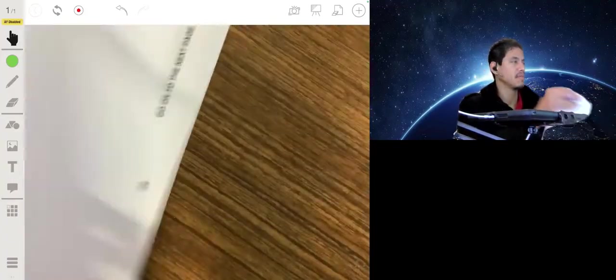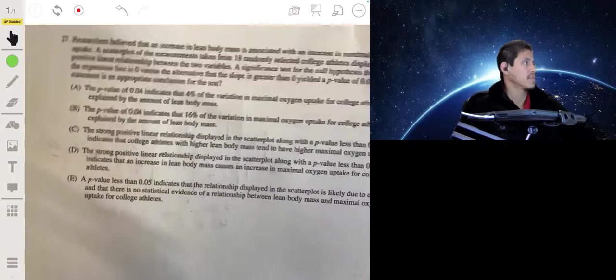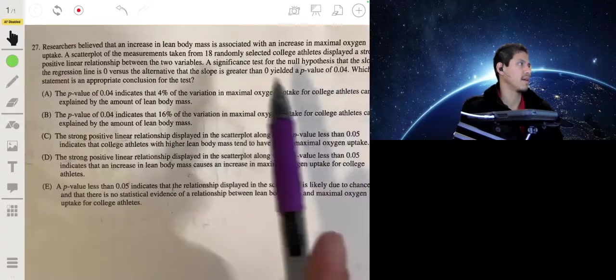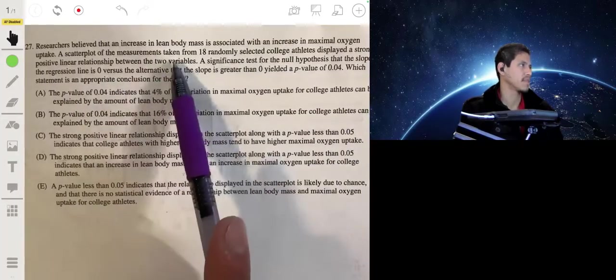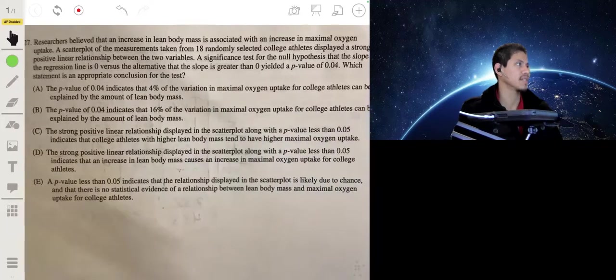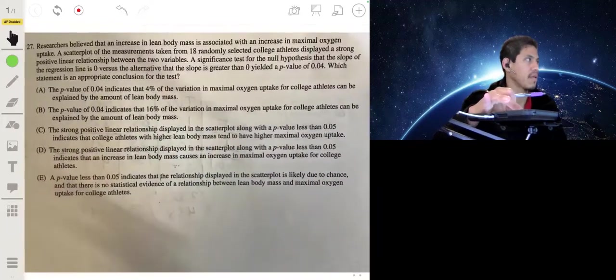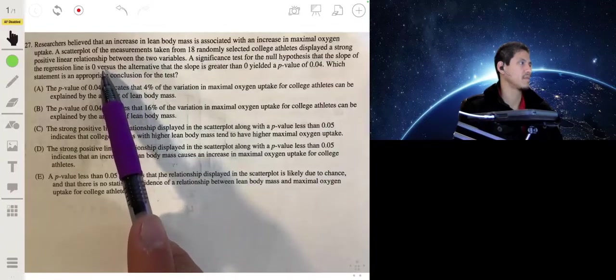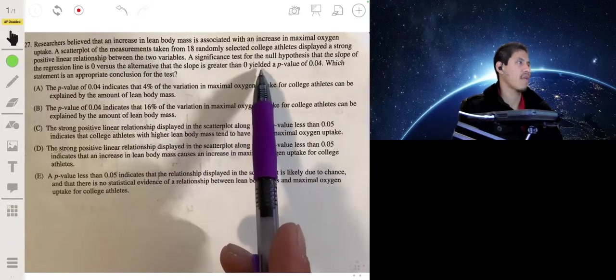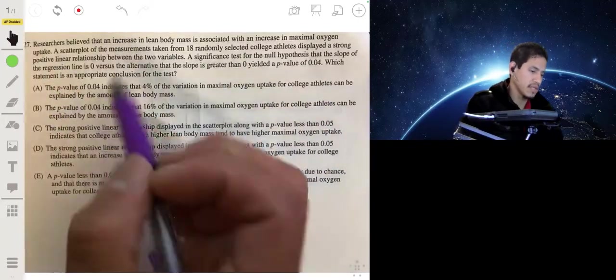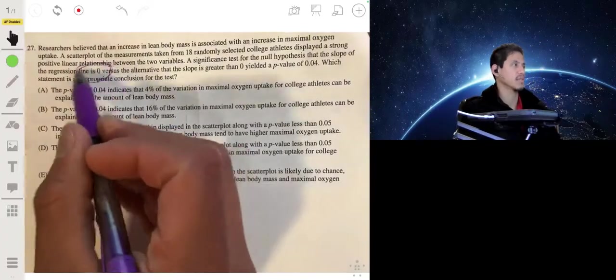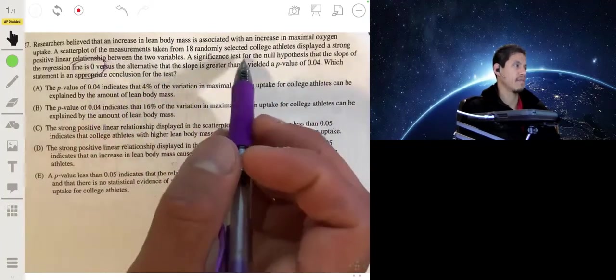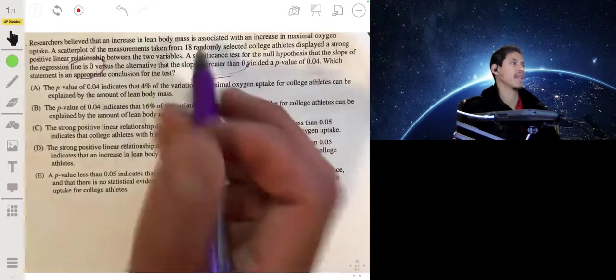All right, researchers believe that an increase in lean body mass is associated with an increase in maximal oxygen uptake. A scatterplot of measurements taken from 18 randomly selected college athletes displayed a strong, positive, linear relationship between the two variables. A significance test for the null hypothesis that the slope of the regression line is zero versus the alternative slope is greater than zero yields a p-value of 0.04. If we're running a significance test where we're claiming that the slope of the regression line is zero, we're basically saying there's no relationship between lean body mass and maximal oxygen uptake. And if the alternative is that the slope is greater than zero, then it's saying that there's a positive relationship.